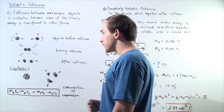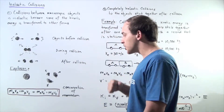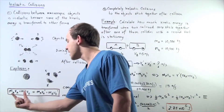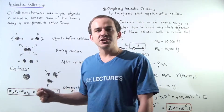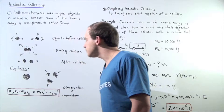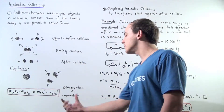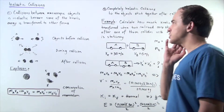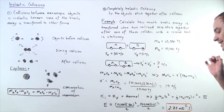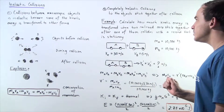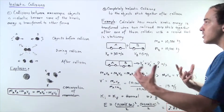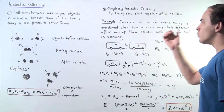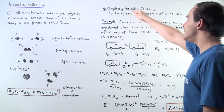What is conserved in our inelastic collisions, as we said earlier, is momentum — we have the conservation of momentum taking place. Another thing to mention is a completely inelastic collision. A completely inelastic collision is a collision in which the colliding objects stick together after the collision. Let's look at the following example that deals with a completely inelastic collision.